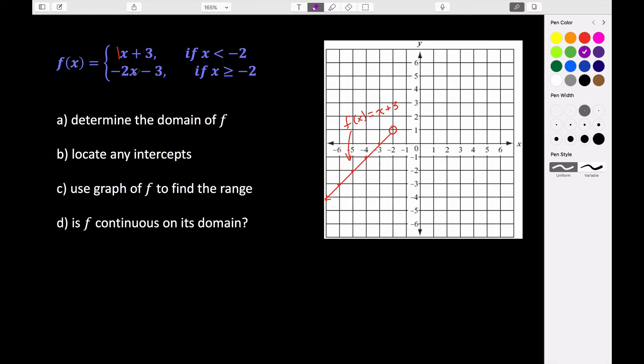So negative 2 gets plugged in here. So we have negative 2 times negative 2 minus 3. Negative 2 times negative 2, that's positive 4. 4 minus 3, that is 1. So when x is negative 2, the y value is 1. So that point that we weren't allowed to fill in earlier, we are actually now allowed to fill in because it's defined by this other line.